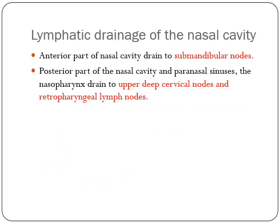Lymphatic drainage: the anterior part of the nasal cavity drains into the submandibular nodes. The posterior part of the nasal cavity and paranasal sinuses, and the nasopharynx, drain to the deep cervical lymph nodes and retropharyngeal lymph nodes.